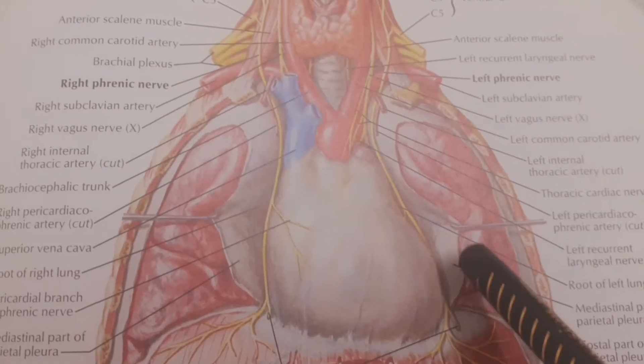Today's artery is the brachiocephalic trunk. We already discussed it is a branch of the arch of aorta.